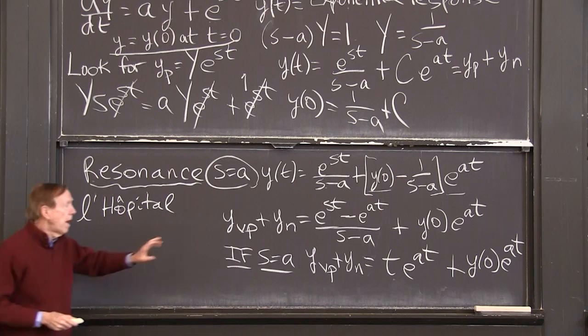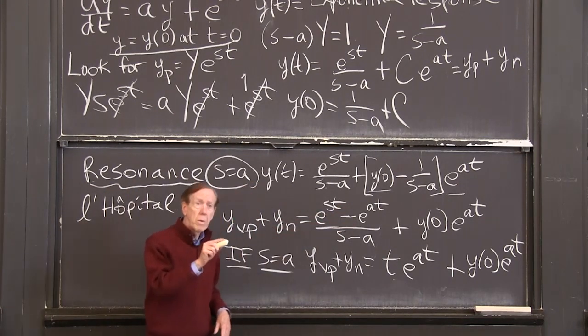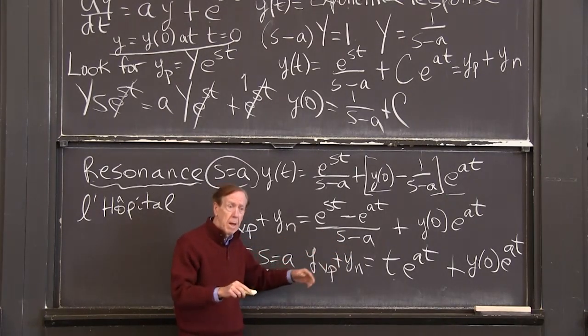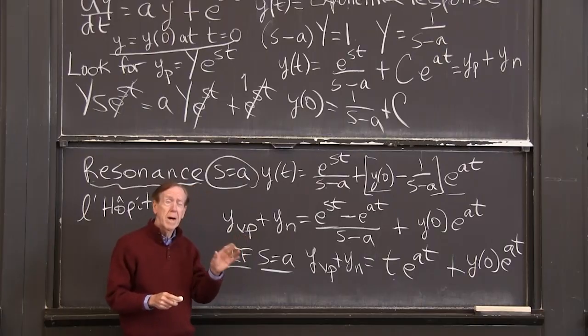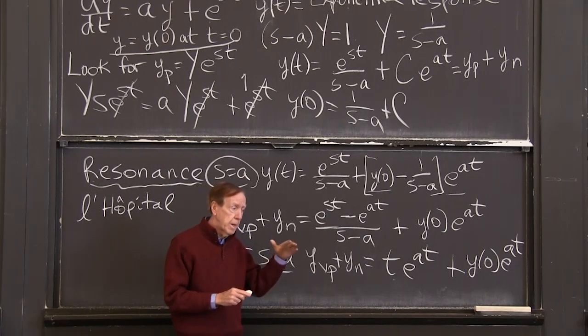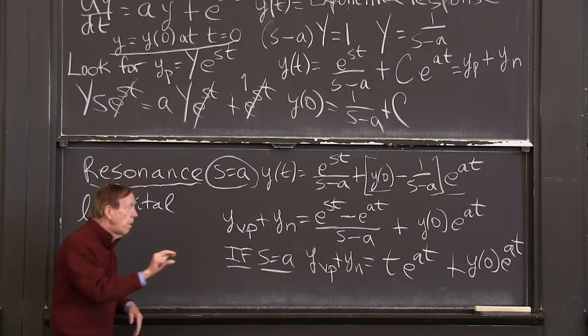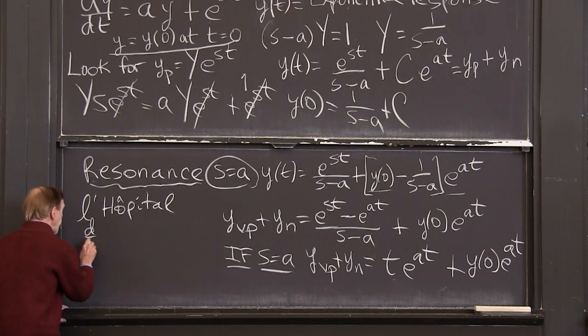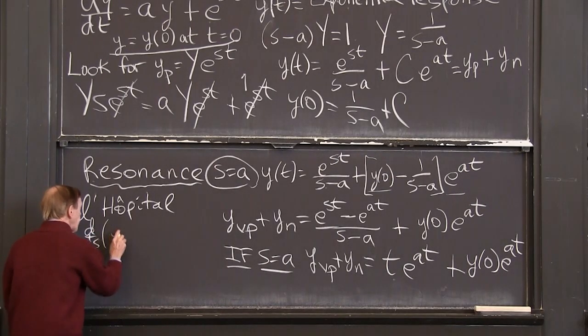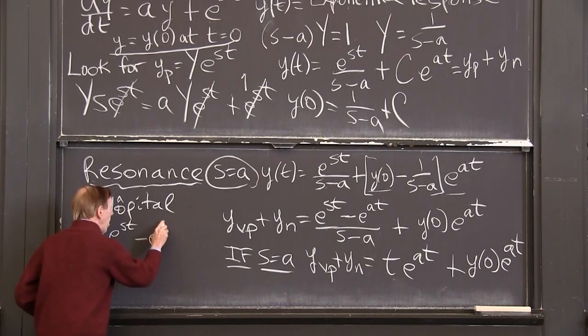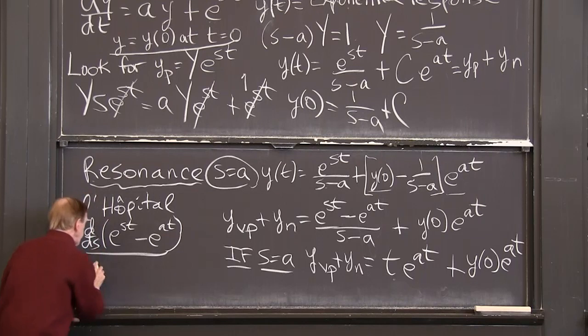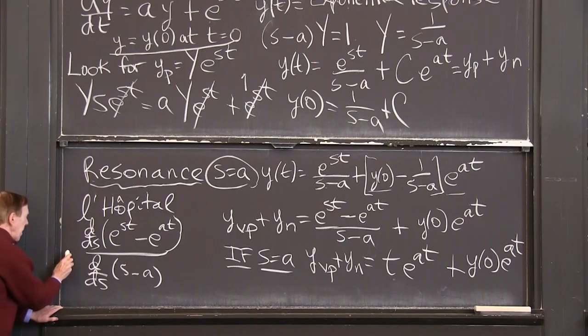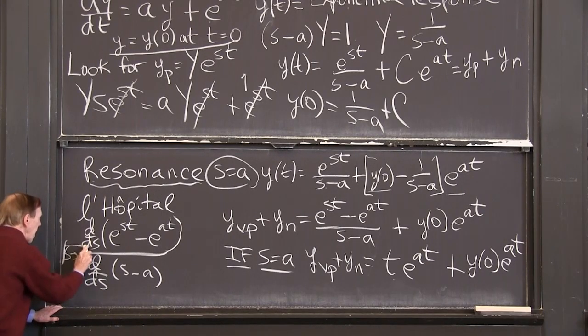And you take this 0 over 0 expression. It's a ratio of two things. The top going to 0 when s goes to a, because these become the same. The bottom going to 0 when s goes to a. And L'Hopital's cool idea was you get the same answer if you take the ratio of the derivatives. So L'Hopital says take the ratio of the derivatives of the top minus the derivative divided by the derivative of the bottom. And then let s go to a in the end.